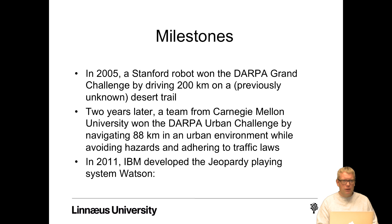In 2005, a Stanford robot won the DARPA Grand Challenge by driving 200 kilometers on a previously unknown desert trail. Two years later, a team from Carnegie Mellon University won the DARPA Urban Challenge by navigating 88 kilometers in an urban environment while avoiding hazards and adhering to traffic laws. Self-driving cars remain a very high area of interest today.